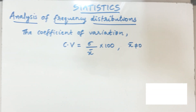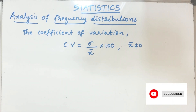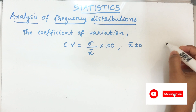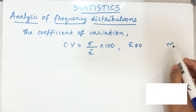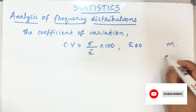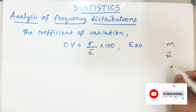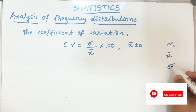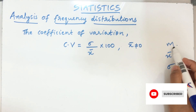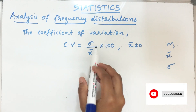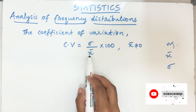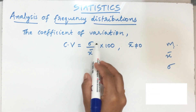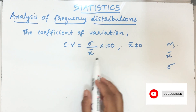If we have some data measured in some unit, say meters, then its mean x̄ will also be in the same unit (meters) and the standard deviation σ will also be in the same unit (meters). When taking their ratio, the units cancel out, making the coefficient of variation independent of unit.